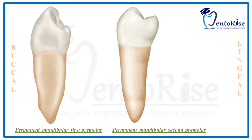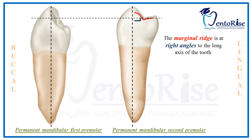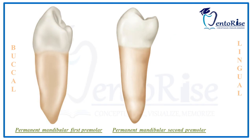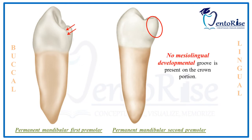The fourth heading is the mesial marginal ridge. In a permanent mandibular second premolar, the mesial marginal ridge is at right angles to the long axis of the tooth, which is not the case in a permanent mandibular first premolar. One striking feature seen in the permanent mandibular first premolar but not in the second premolar is the presence of the mesiolingual developmental groove. No such mesiolingual developmental groove is present on the crown of the permanent mandibular second premolar.